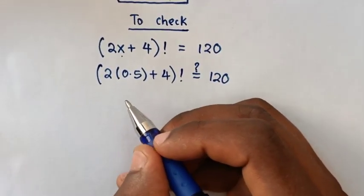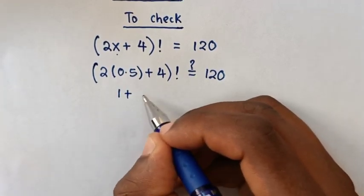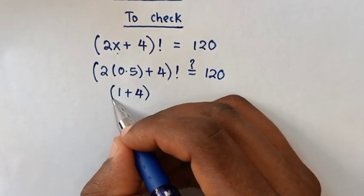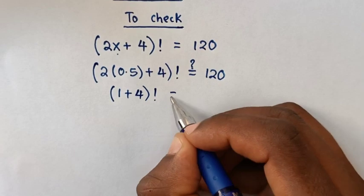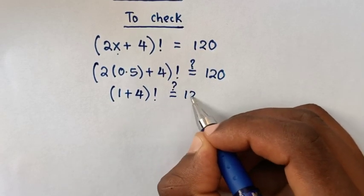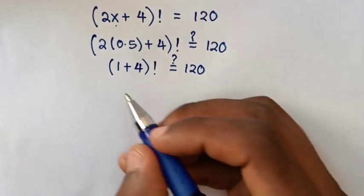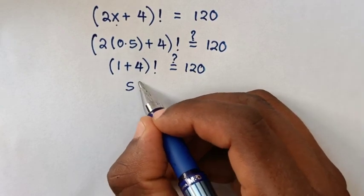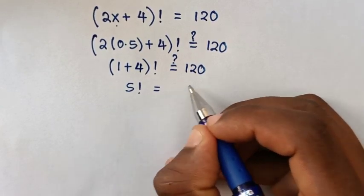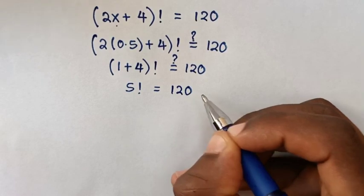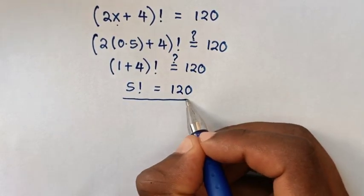Then it will be 1 plus 4, then bracket factorial is equal to 120. Then 5 factorial is equal to 120. Therefore, it's true for the value of x, which is 0.5 or a half.